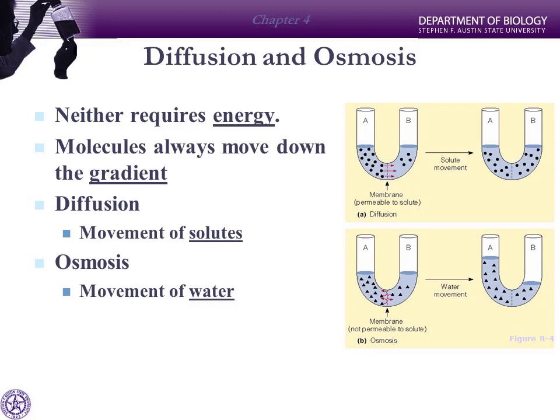Molecules move in the direction of high concentration to low concentration, with no energy required and nothing else helping. That's simple diffusion. In our example, we have a membrane separating two solutions that is permeable to the solute but not to water. So solutes move from high concentration in A to low concentration in B to balance out — that is diffusion.